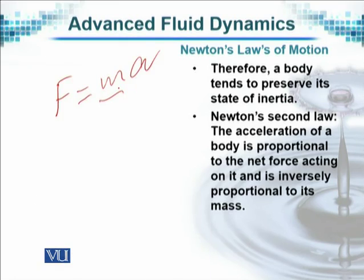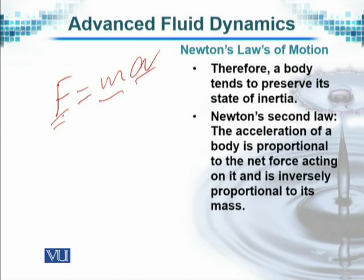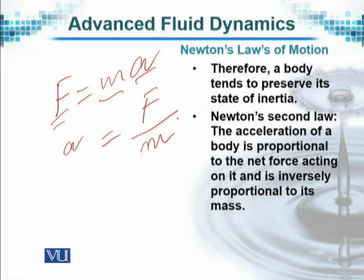It is obvious from here that F is equal to Ma, where M is the mass of the body we are considering — for instance a certain fluid — A is its acceleration, and F is the net force acting on it. It is a vector quantity since acceleration is a vector quantity. The acceleration is inversely proportional to mass, meaning A equals F over M, which is inversely proportional to 1 over M — simple algebra that everybody is familiar with.